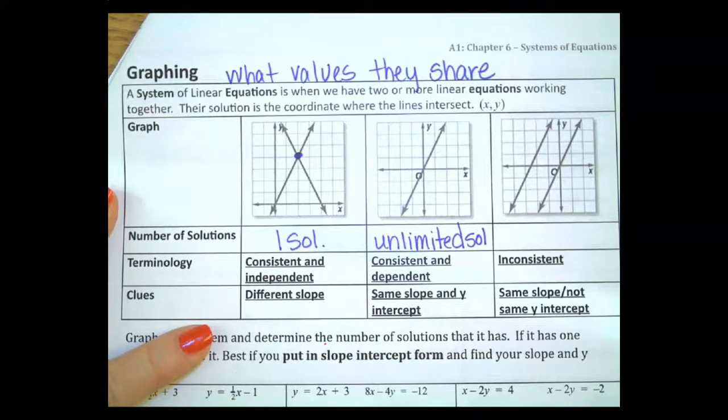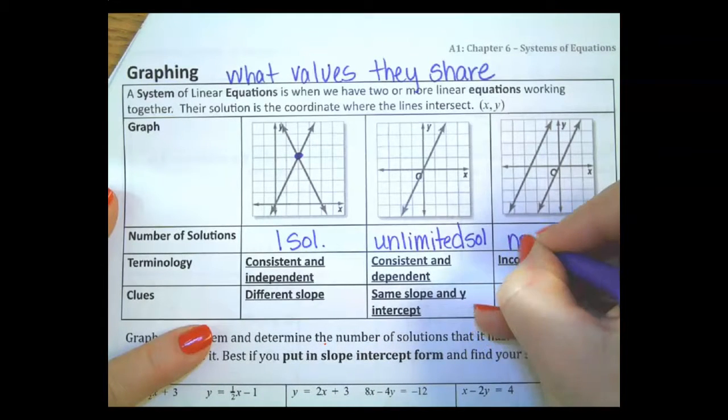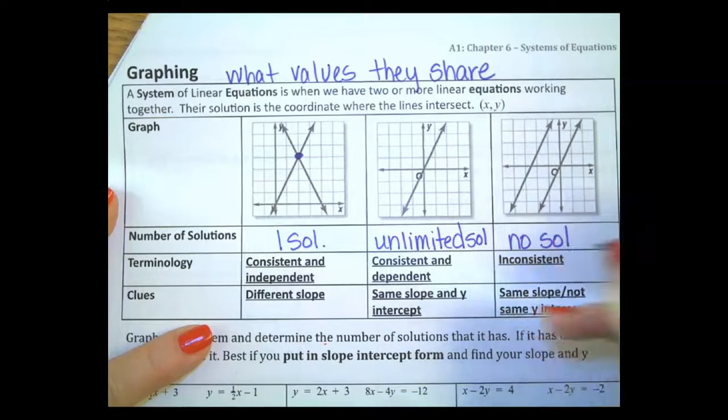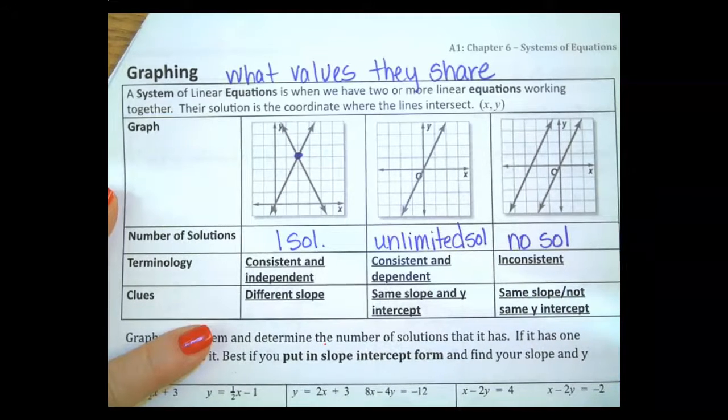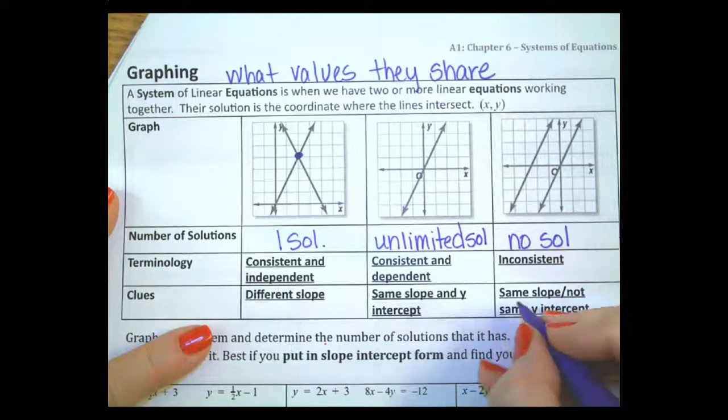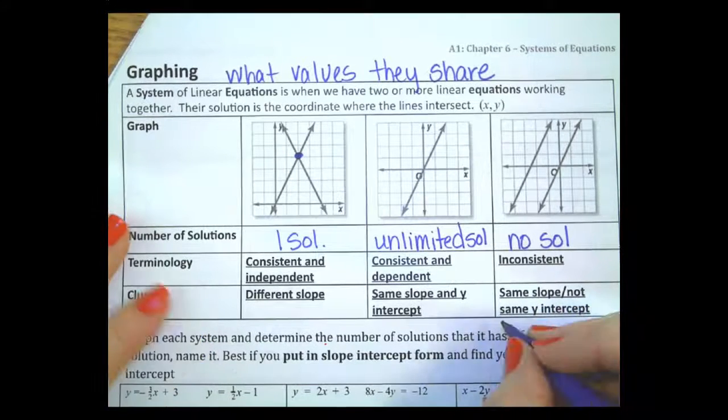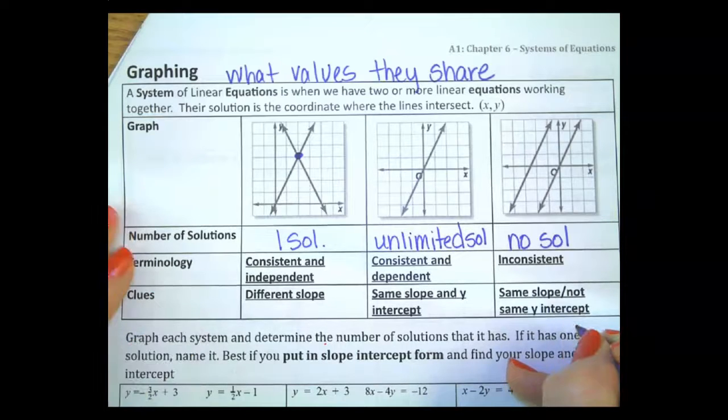The next one, no solutions. They share no solutions. They're parallel. They'll never touch. They'll never meet. It's called inconsistent. And how do we know? This time we know they have the same slope, but not the same y-intercept. And that's what makes them parallel.